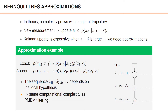We will use this approximation in one of the simulation examples, and the resulting algorithm is referred to as a PMBM tracker without smoothing. Solving the assignment problem is often the most computationally demanding part of the algorithm, and it is possible to use better approximations than the one mentioned above without changing the overall complexity significantly.